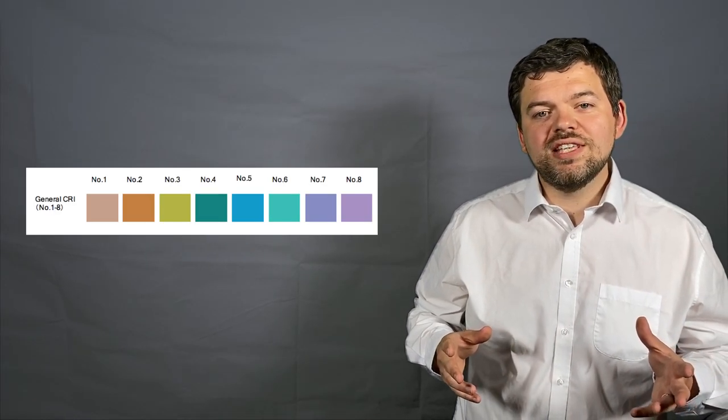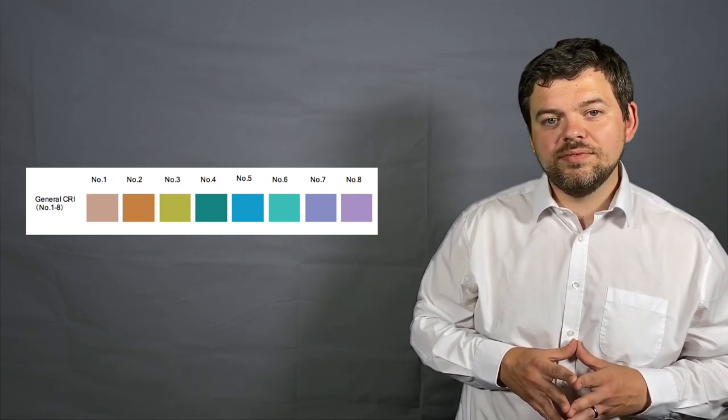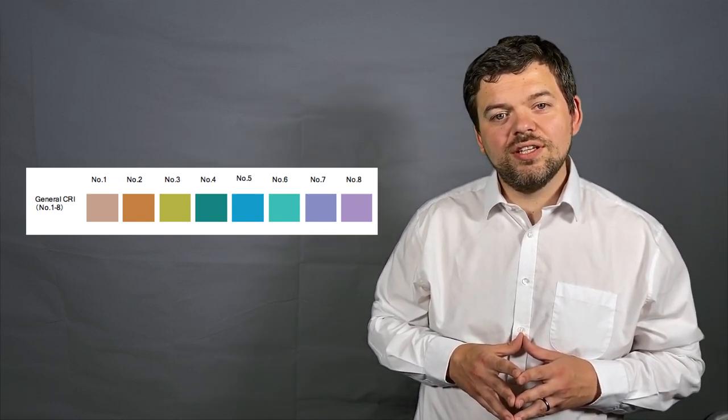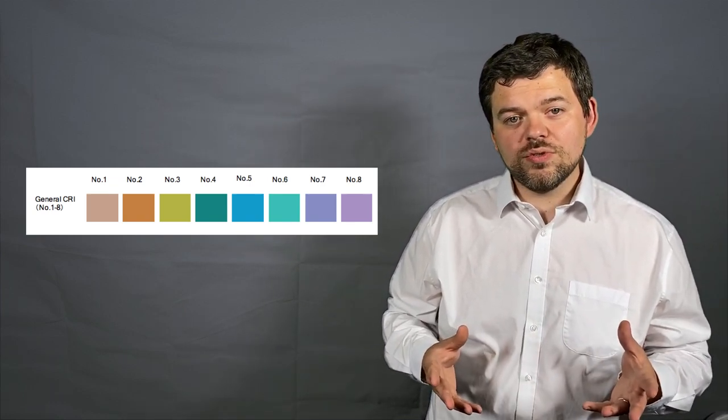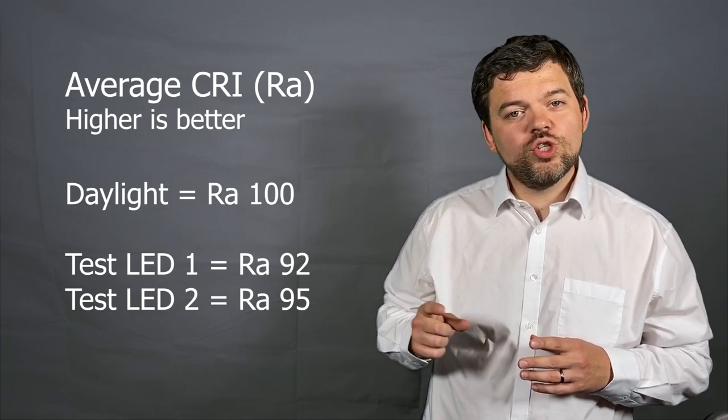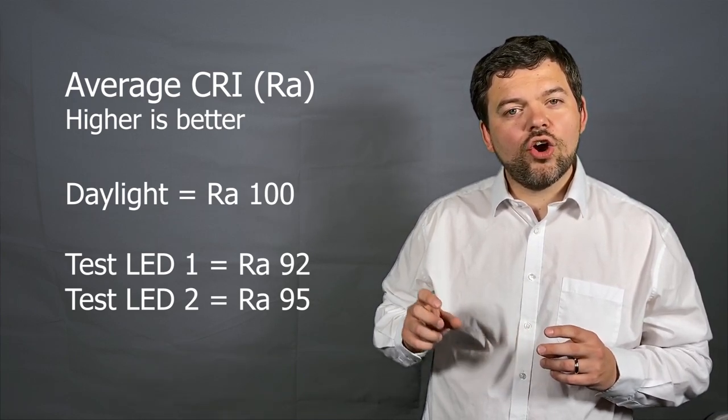The color samples used for classic CRI measurements are these eight Munzel pastels. These unsaturated colors are evenly distributed over the complete range of hues and a value is given to how well a source renders each of them. This value is from 0 to 100. An average of all the numbers is given as the RA number.